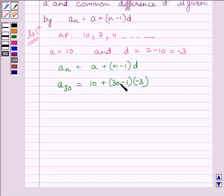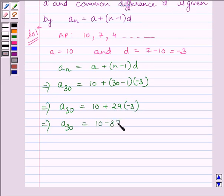We have substituted the corresponding values of a, n, and d in this expression. So, we have a30 = 10 + 29(-3) = 10 - 87. This further implies 30th term is equal to minus 77.